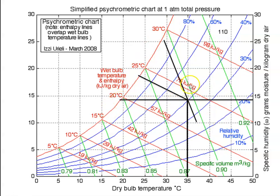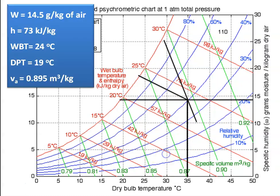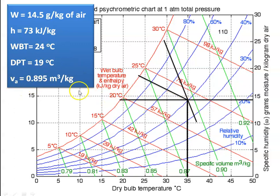Along the green color line, this gives the specific volume of the air. Reading the values: specific humidity is 14.5 grams per kg of air, enthalpy of the air is 73 kilojoules per kilogram, wet bulb temperature is 24 degree Celsius, dew point temperature is 19 degree Celsius, and specific volume of the air is 0.895 meter cube per kilogram. This is how you use the psychrometric chart for reading the values.